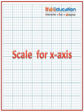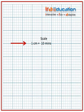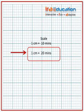We choose the scale for the x-axis such that the minimum and maximum values of time are represented and the whole graph paper is used. The minimum and maximum values of time are 0 minutes and 60 minutes. For the scale, we can choose one centimeter equal to 10 minutes, or one centimeter equal to 20 minutes. Let's choose the scale as one centimeter equals 20 minutes for the x-axis.